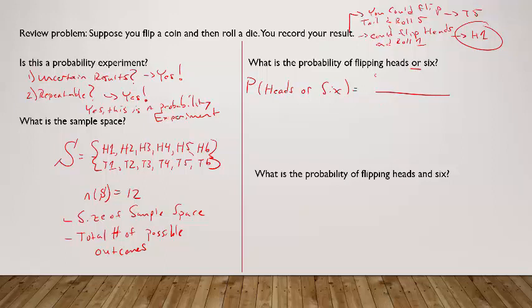So just using that classical definition, it's the number of ways to flip heads or roll six—think about logically what the or statement implies—divided by the total number of outcomes. Well, the good news is we know the total number of outcomes is 12.